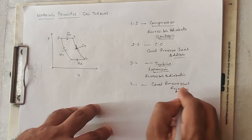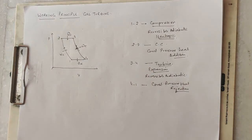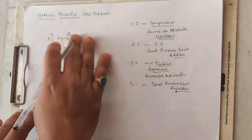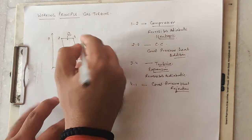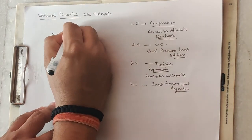This is the PV diagram of the gas turbine cycle — this is the Brayton cycle, which is an air standard cycle based on air as the working medium.